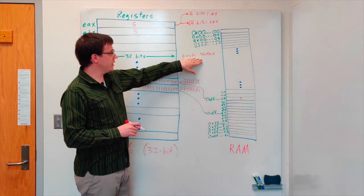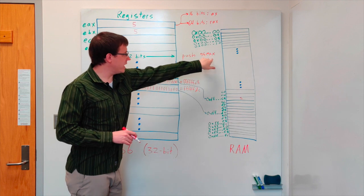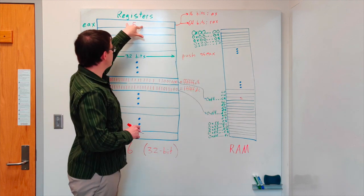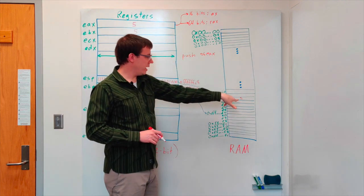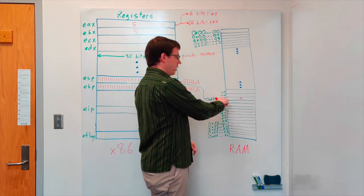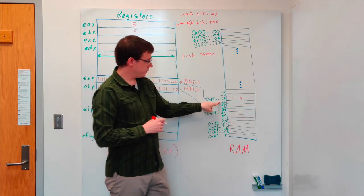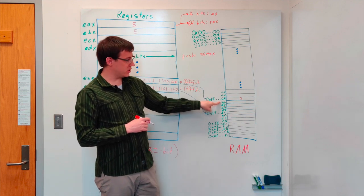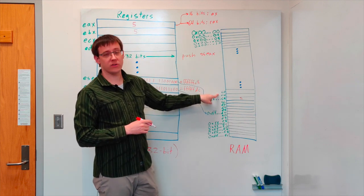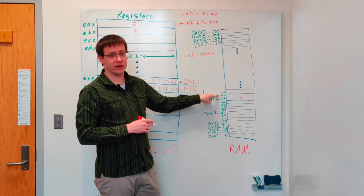So the push instruction takes the data from this register, in this case EAX, and puts it one location above the current top of the stack. One location above, in this case, means four addresses earlier, since we're working with 32-bit values.